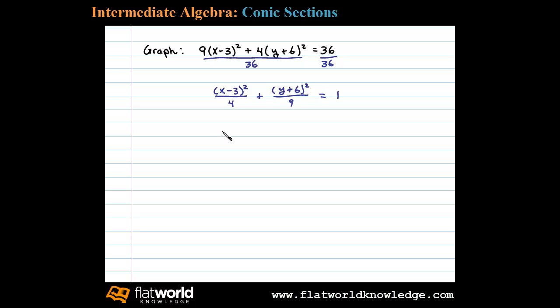Now we'll use this to determine the center, the major and the minor radii. So here we can see the center is 3 comma negative 6, and a equals the square root of 4 or 2. B here is the square root of 9 which is 3.